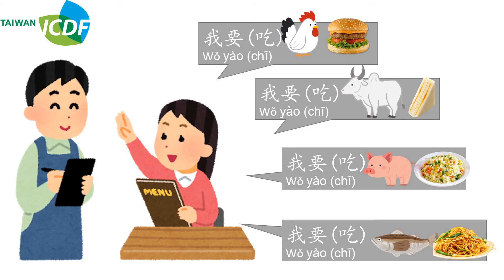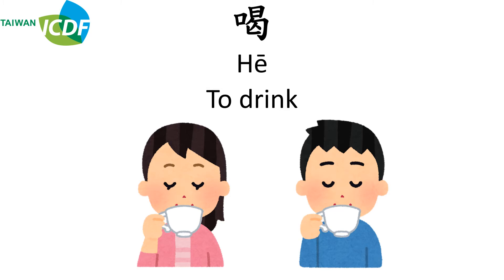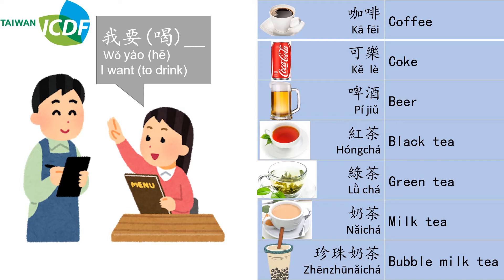The next verb we are going to learn is 喝 (to drink). Now let's combine 我要 with 喝 together: 我要喝. Of course, you can say just 我要, but I would like to enrich your sentences with 喝.